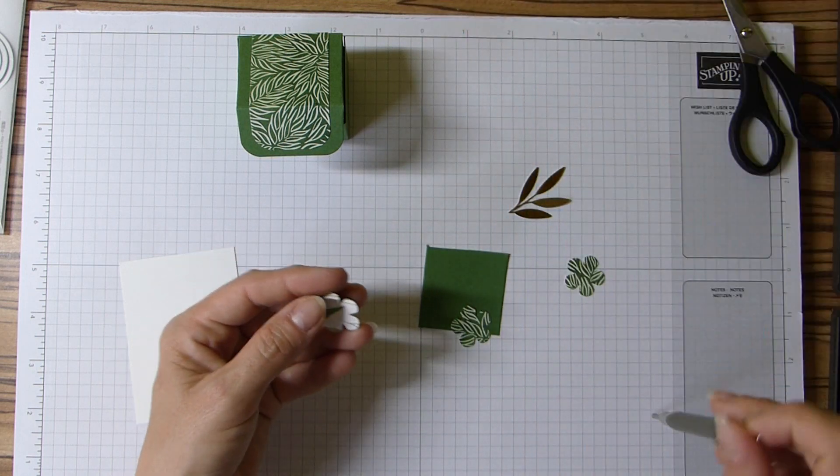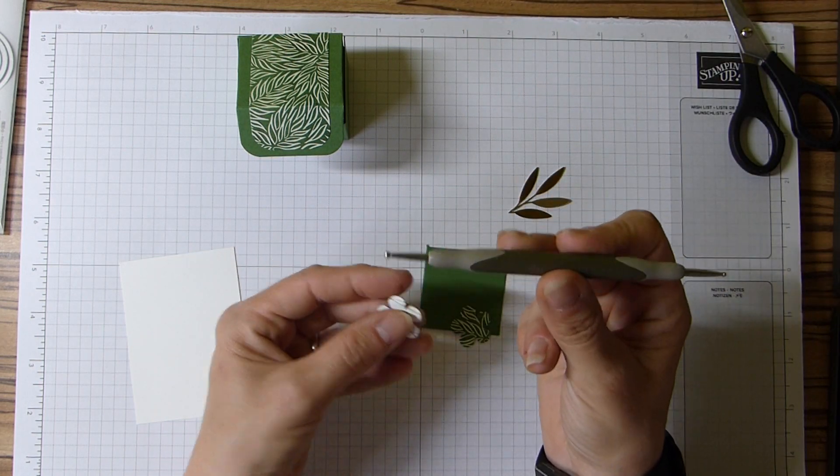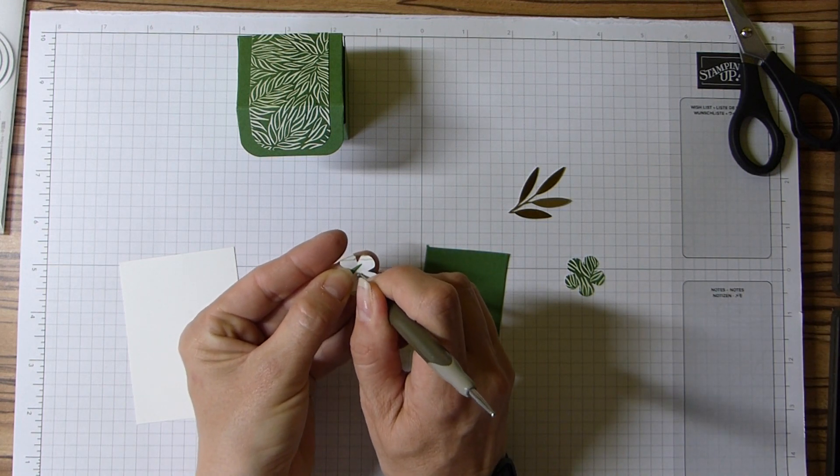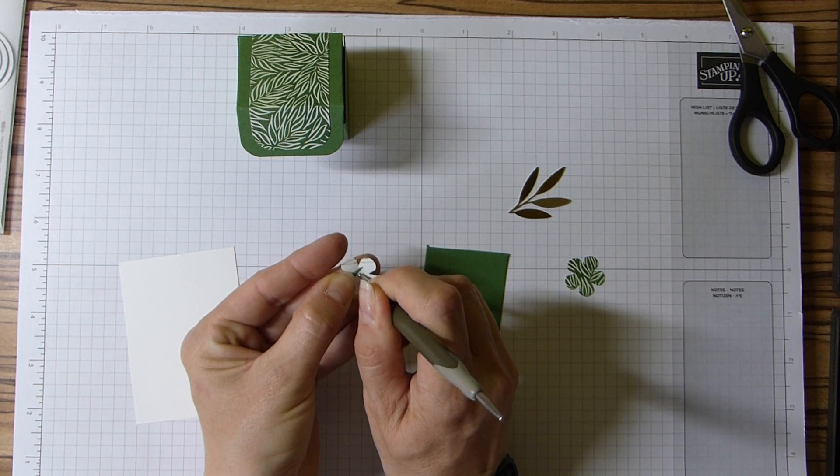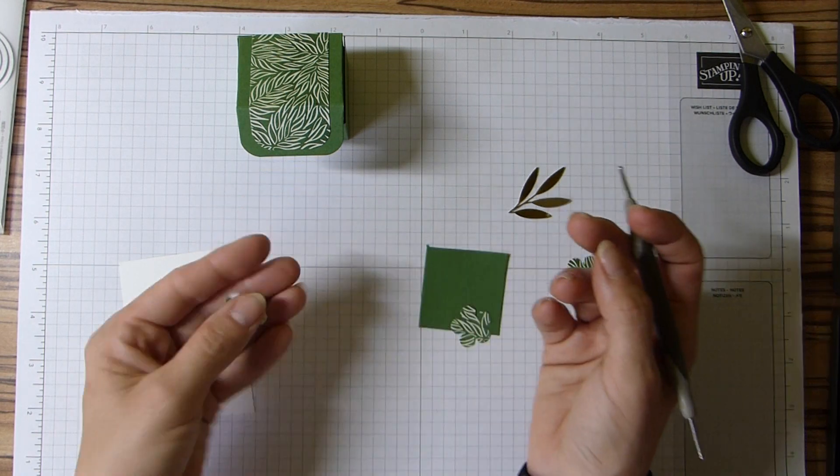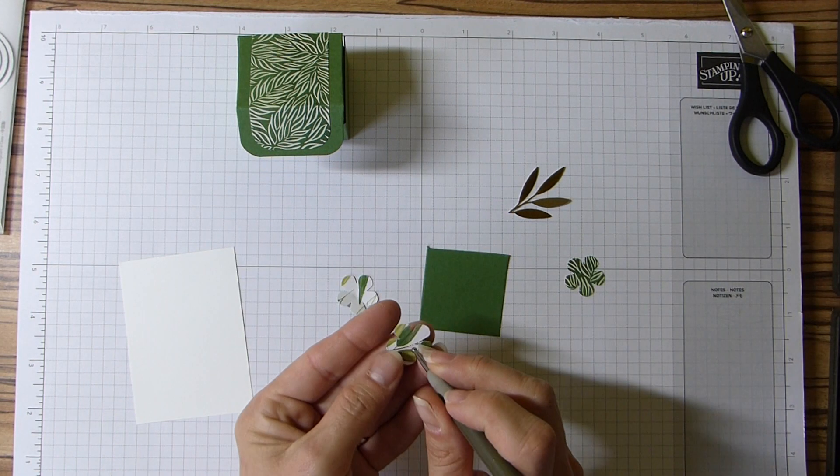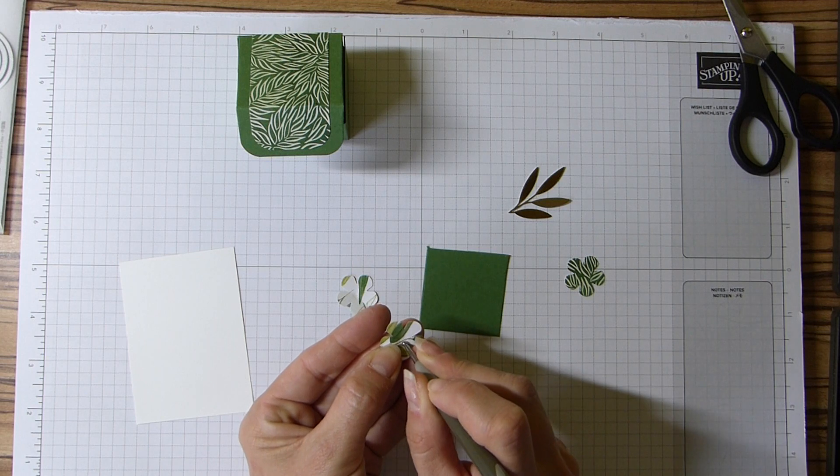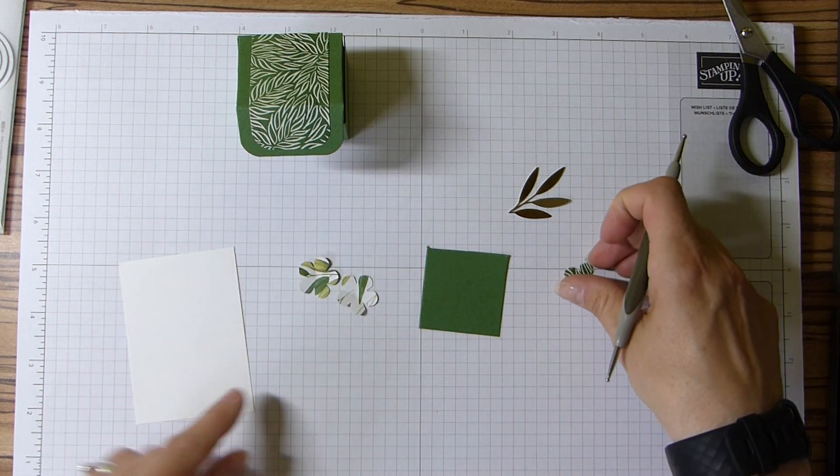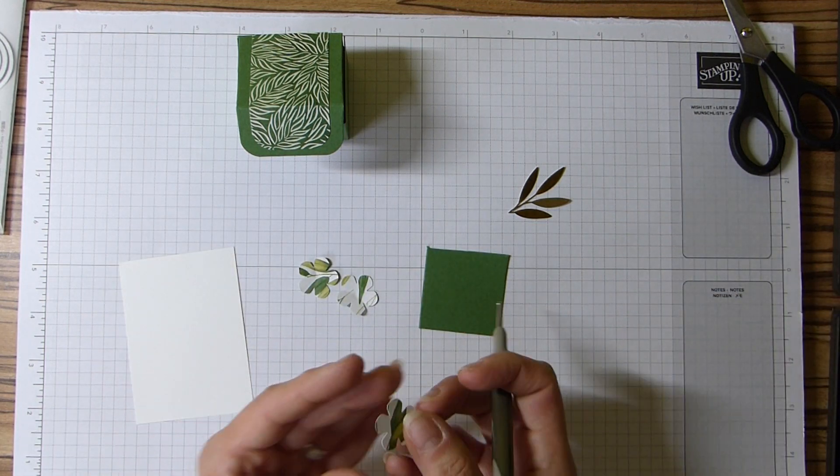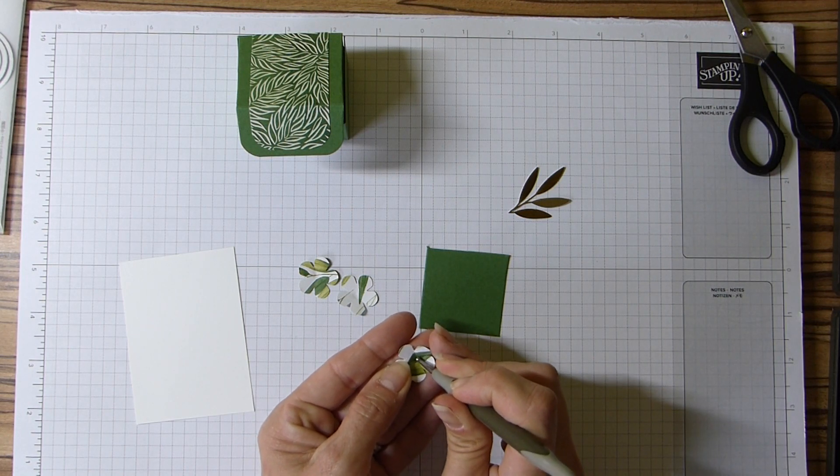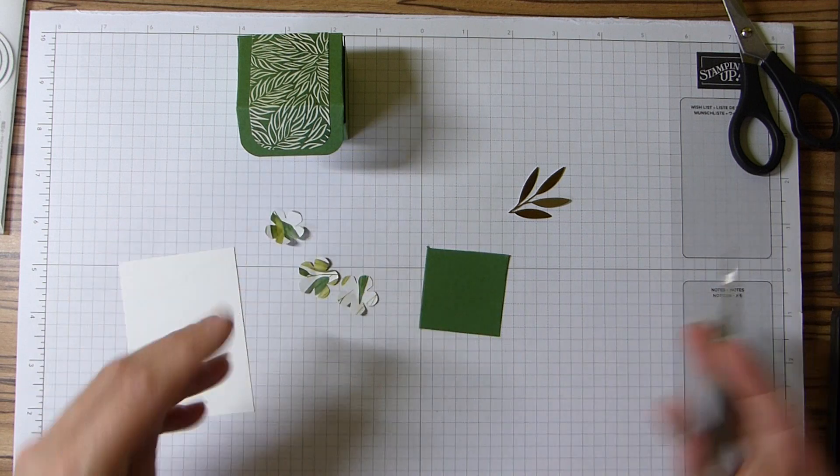And then to be honest, what I generally did with these is I got my scoring tool, and I just on my finger did sort of circular movements in the middle of the flower. It kind of encourages it to curl up and shape a little. Just some small movements there in the center, and as you can see how it sort of sat slightly raised. There we go, that's those done.